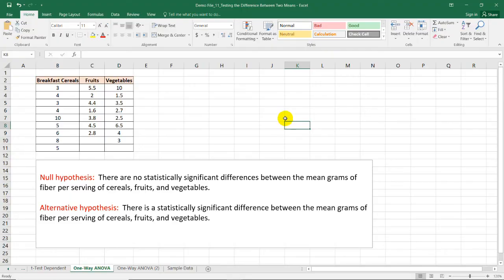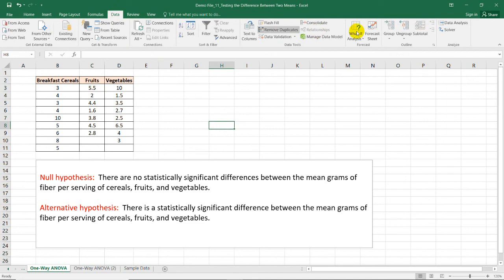The first thing that we need to do is to transfer our data in Microsoft Excel. Our null hypothesis states that there are no statistically significant differences between the mean grams of these three groups, while the alternative hypothesis says otherwise. To run the analysis, let's go to the data ribbon. Go to data analysis.